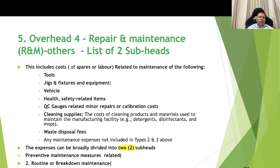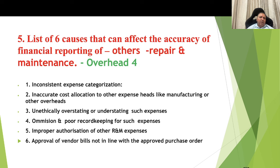Overhead number 4: repair and maintenance others. This includes tools, jigs, fixtures, vehicles, health and safety, QC gauges, cleaning supplies, waste disposal fees, etc., covering both the spares, labor, and consumables components. Expenses are broadly divided into two subheads: preventive maintenance and routine and breakdown maintenance. The six causes that can affect the accuracy of financial reporting are: number 1, inconsistent expense categorization; number 2, inaccurate cost allocation to other expense heads like manufacturing overheads; number 3, unethically overstating or understating such expenses; number 4, omission and poor record keeping; number 5, improper authorization of R&M expenses and approval of vendor bills not in line with approved purchase orders; and number 6 relates to similar issues as discussed previously.